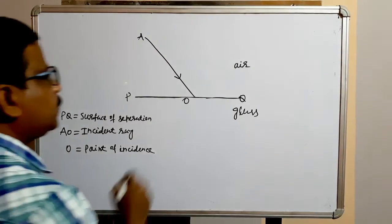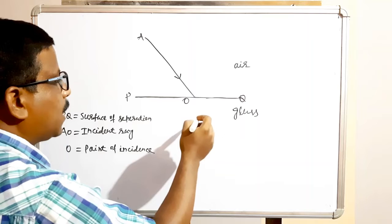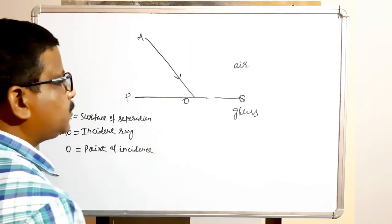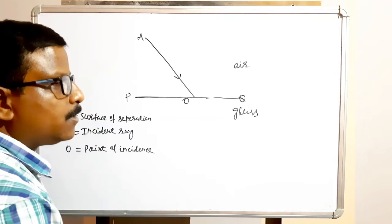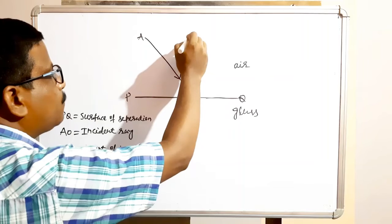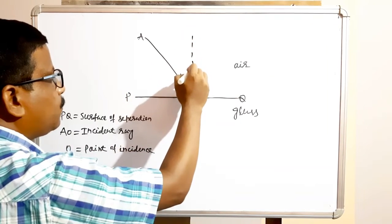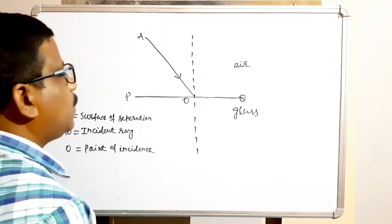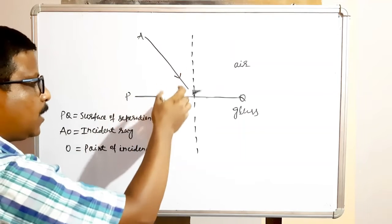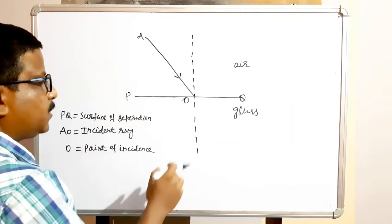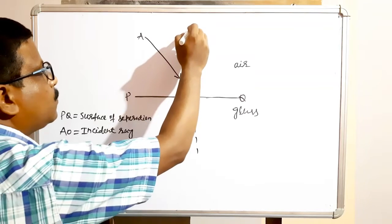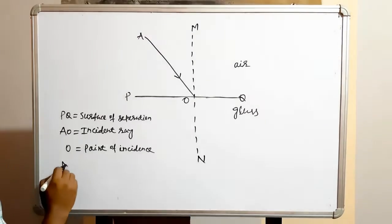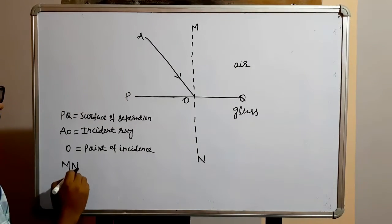When the ray of light travels from air to glass, it will bend towards the normal because it goes from rarer to denser medium. What is the normal? A perpendicular drawn at the point of incidence on the surface of separation is called the normal, denoted as MN.